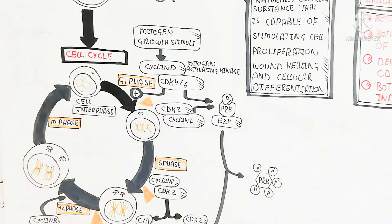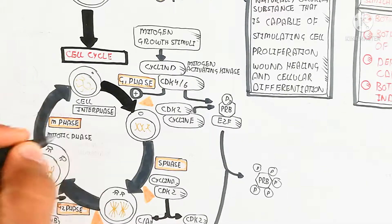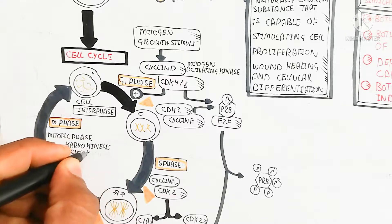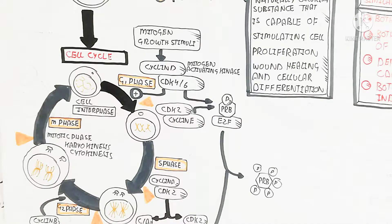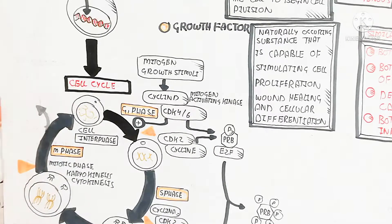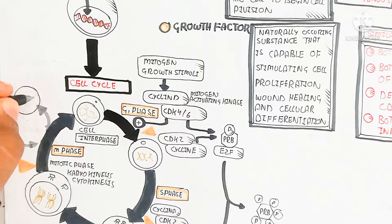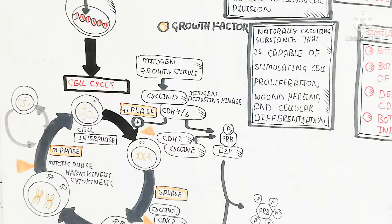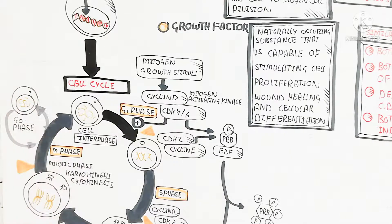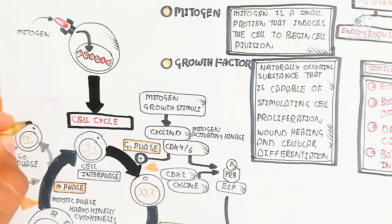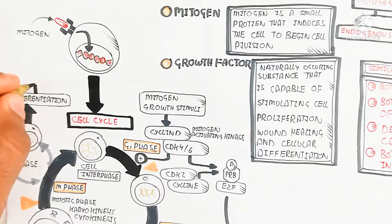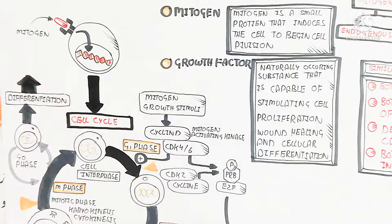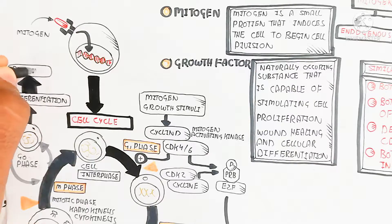After the complete G2 phase, a checkpoint occurs to begin M phase — the mitotic phase — which completely divides the cell through prophase, metaphase, anaphase, and telophase, followed by karyokinesis and cytokinesis for complete separation. The cell then either goes on as a stem cell to produce more cells, or enters G0 — the quiescent phase — for differentiation into specialized cells like nerve cells, hepatocytes, pancreatic cells, or gastrointestinal epithelial cells.